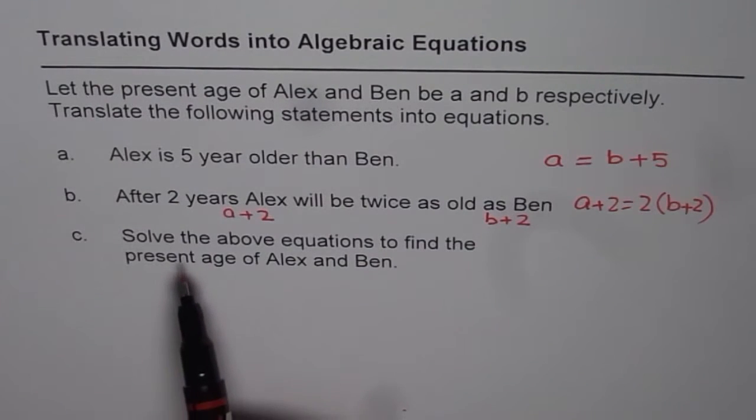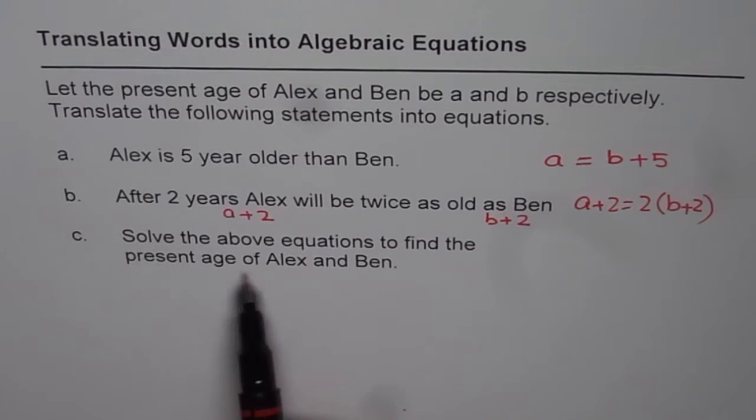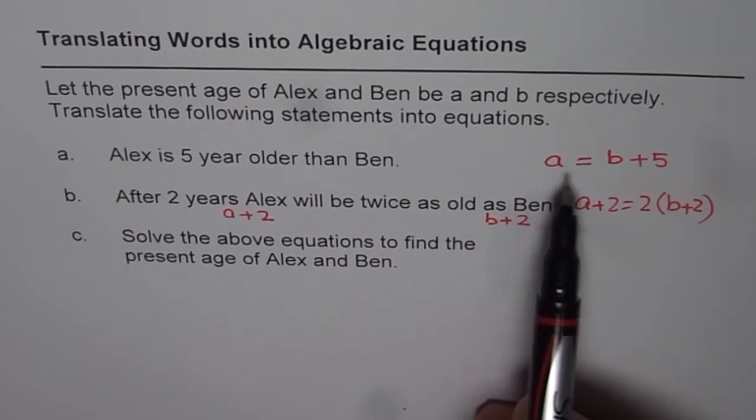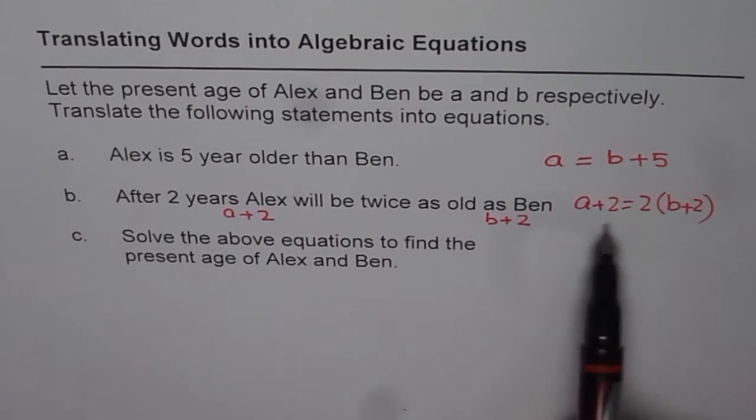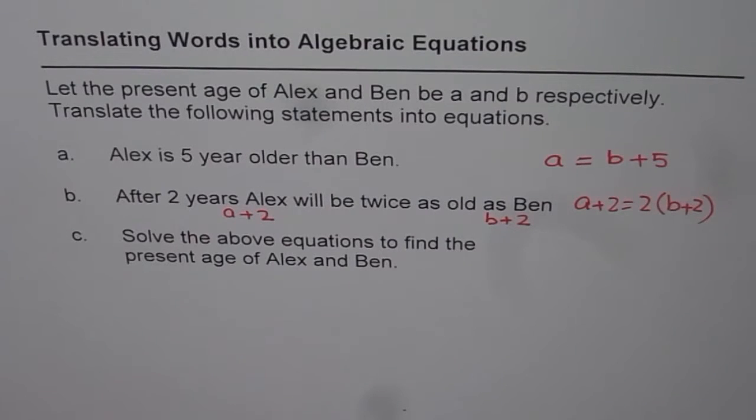Part C is, solve the above equations to find present age of Alex and Ben. Present age is A and B. Now, to solve this equation, what we can do is, we can follow the method of substitution.